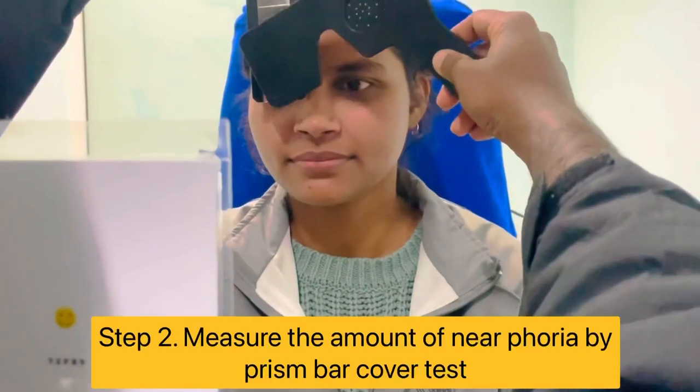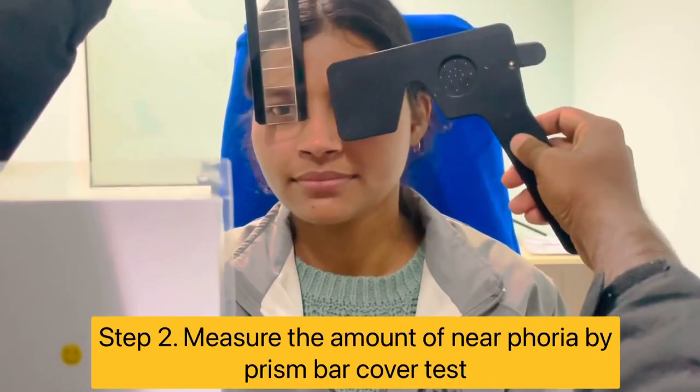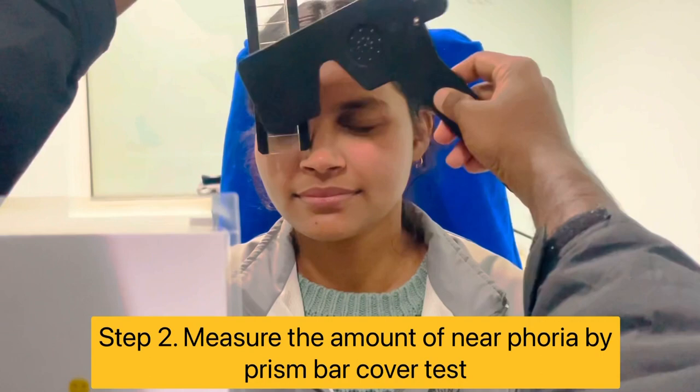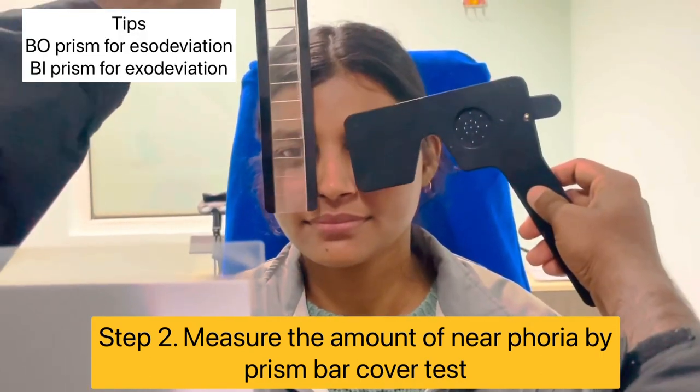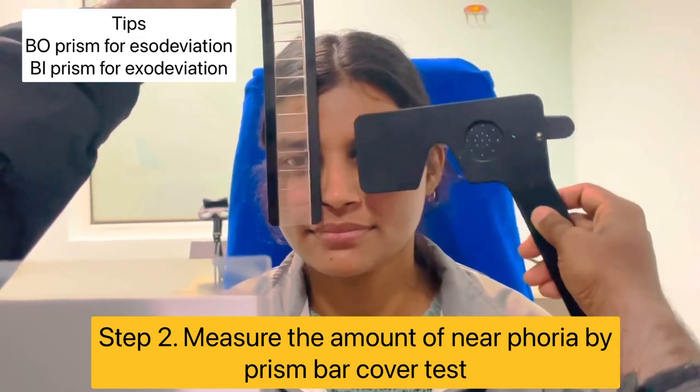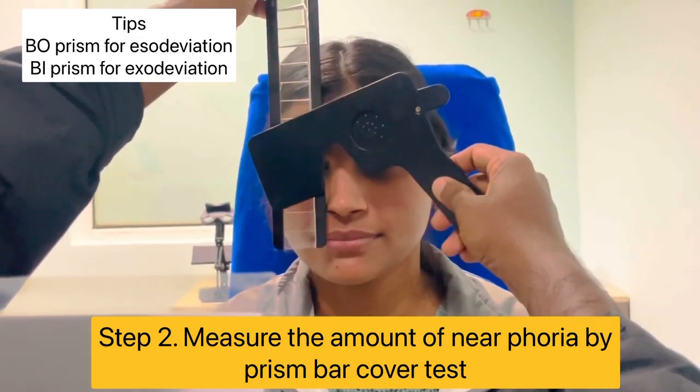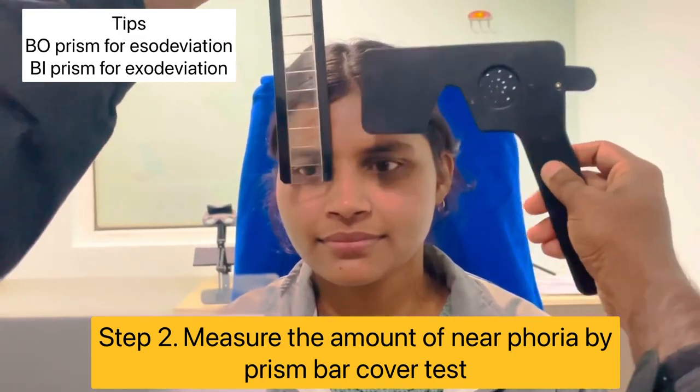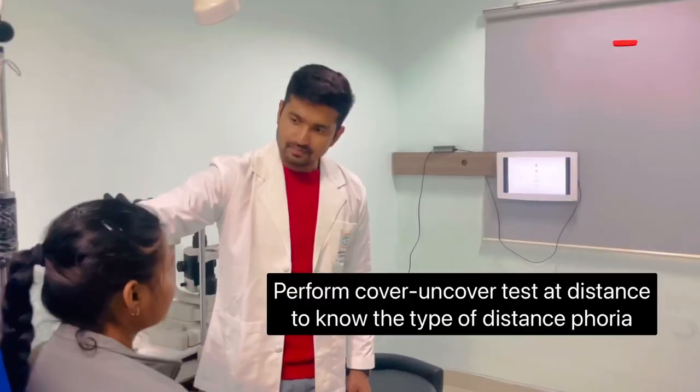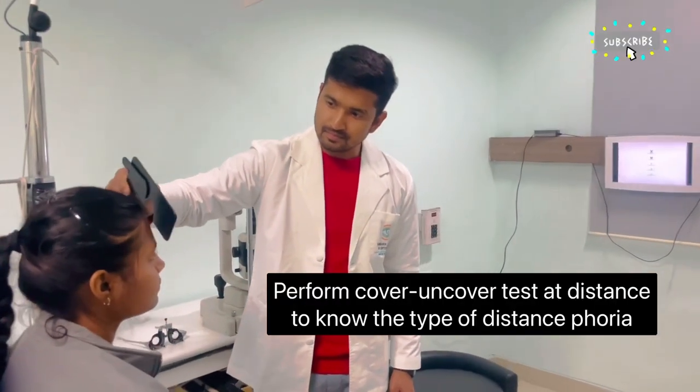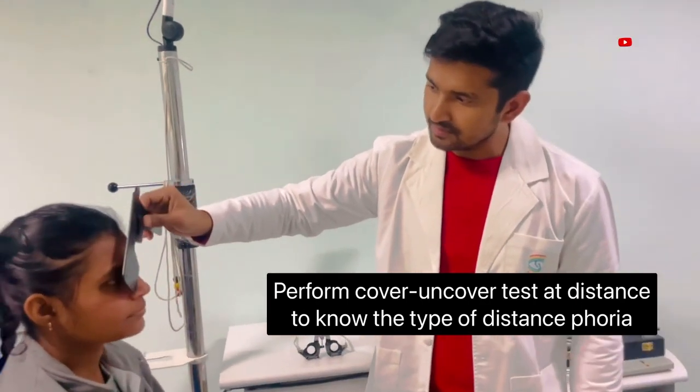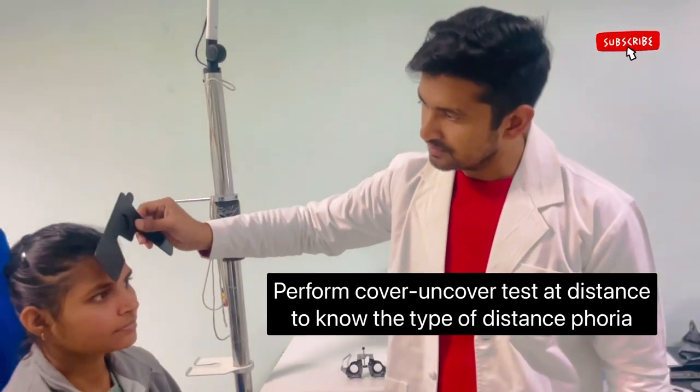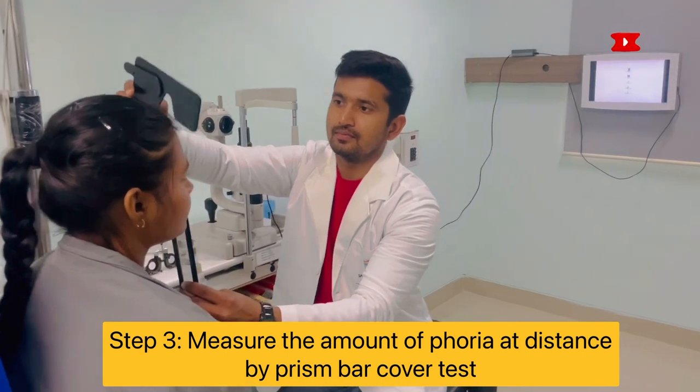Now use prisms to neutralize that phoria. For esodeviations, use base-out prism. The third step is to measure the distance phoria. Again you need to check the type of phoria by performing cover-uncover test and neutralize that phoria using the prism.